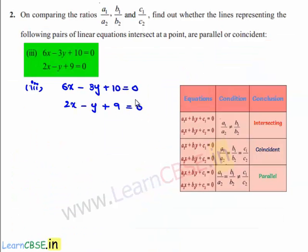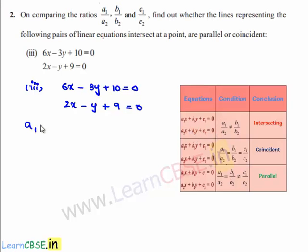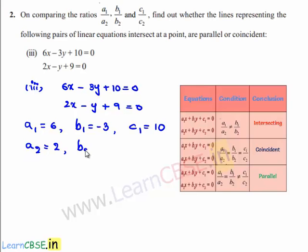If we compare the given set of equations with the standard equations a1x plus b1y plus c1 is equal to 0 and a2x plus b2y plus c2 is equal to 0, we get a1 is equal to 6, b1 is equal to minus 3, and c1 is equal to 10. Similarly, a2 is equal to 2, b2 is equal to minus 1, and c2 is equal to 9.